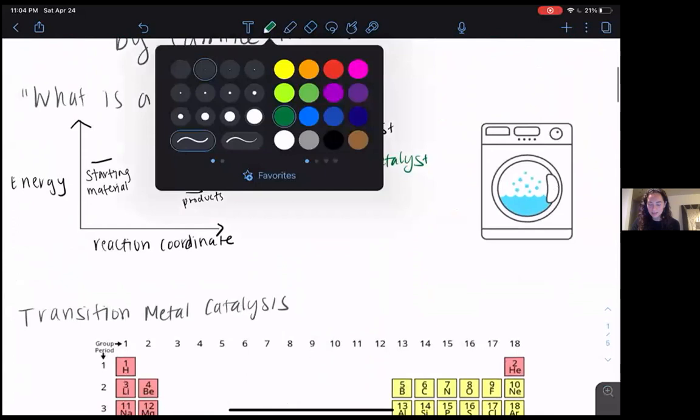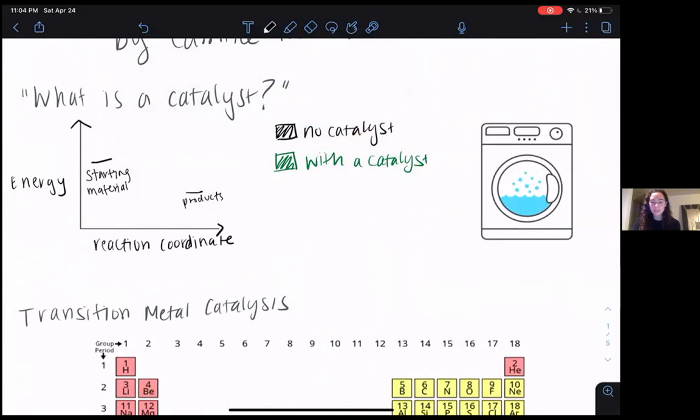First of all, what is a catalyst? In chemistry, a catalyst is something that lowers the energy required for a reaction to take place. If you imagine that without a catalyst, a reaction has a high energy barrier, but in the presence of a catalyst, we can lower that energy barrier so that reaction can occur, as shown here, where on the left we have the starting materials, and on the right we have the products, and the energy barrier is the line I just drew.